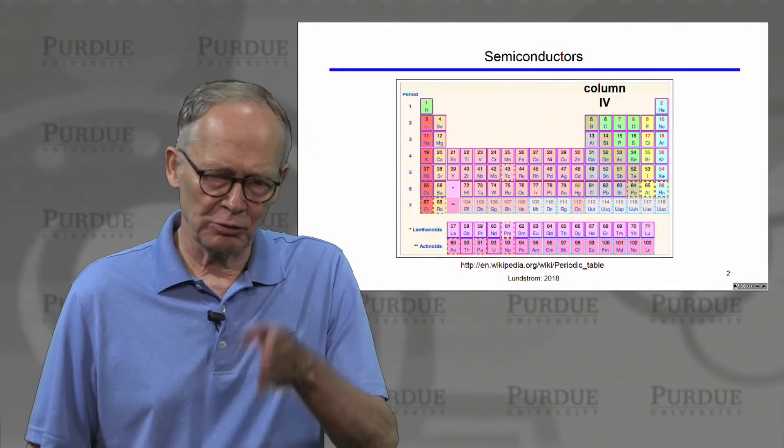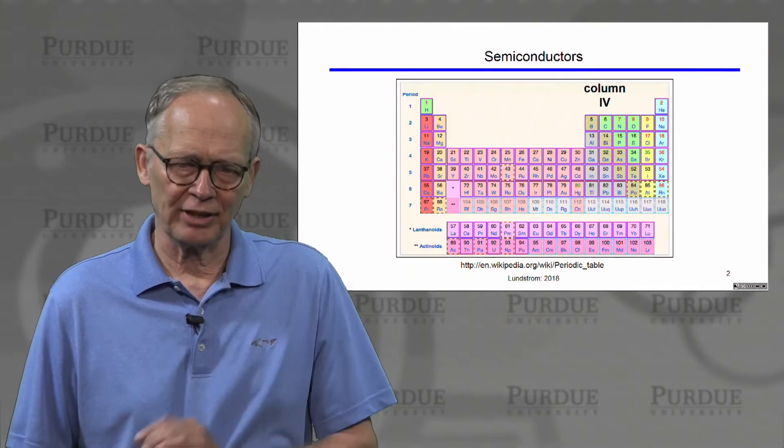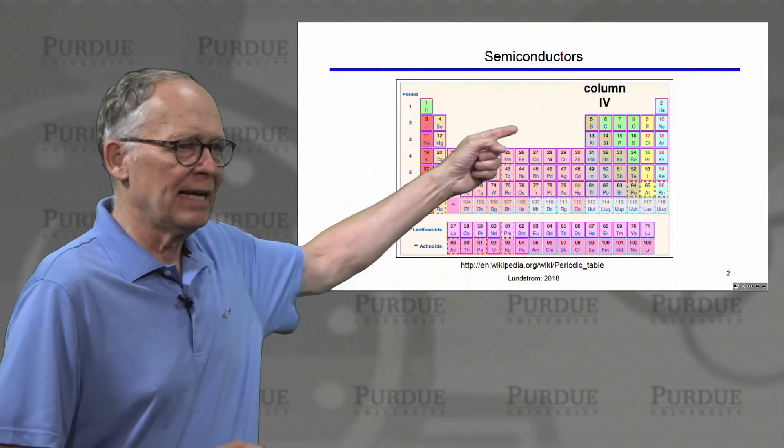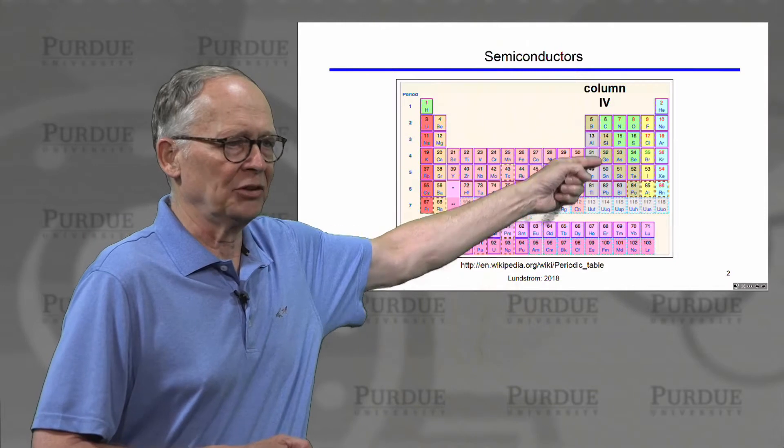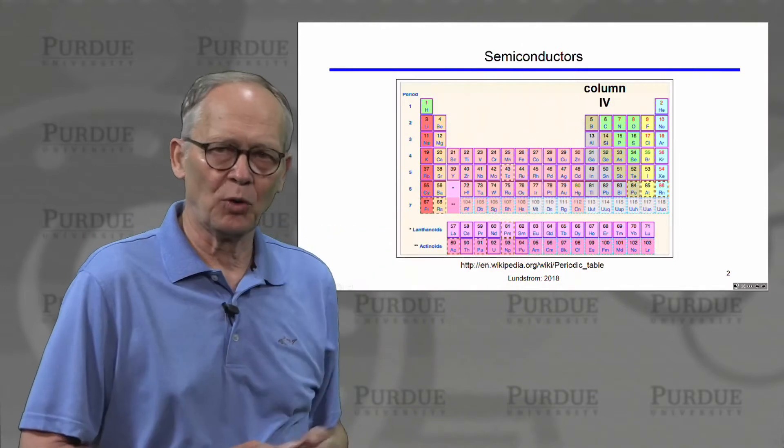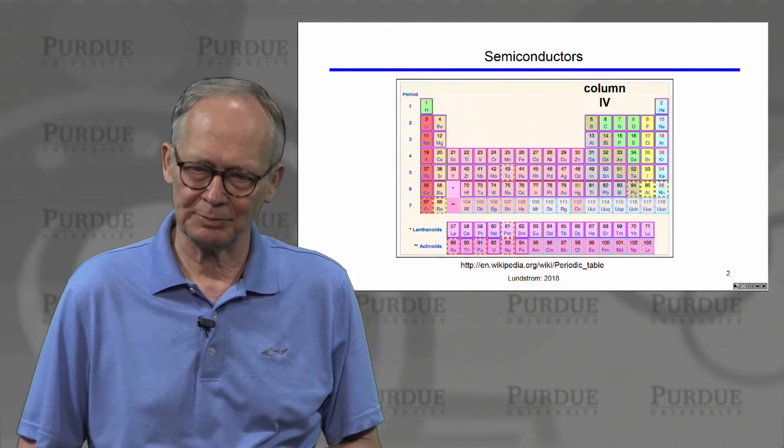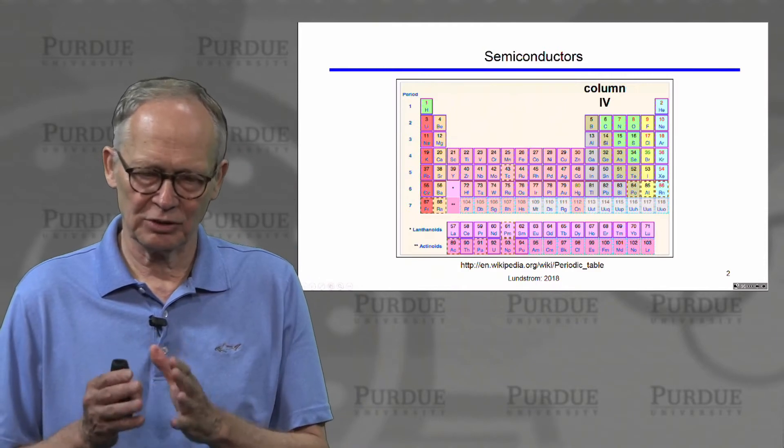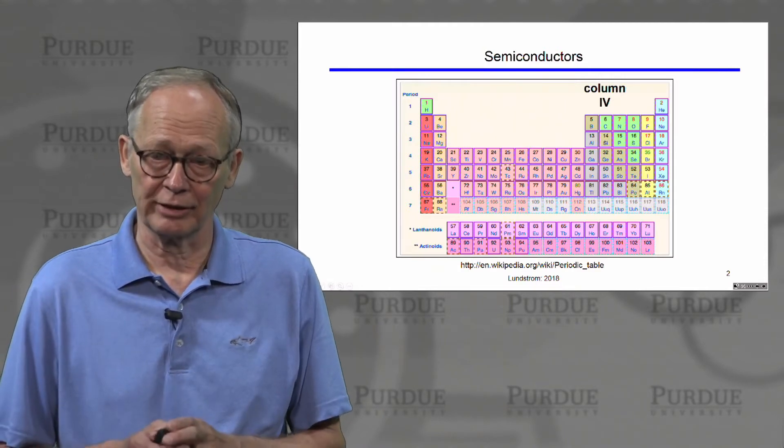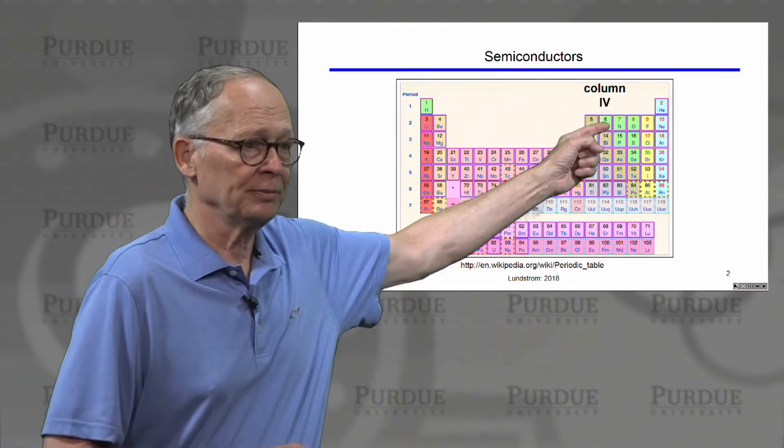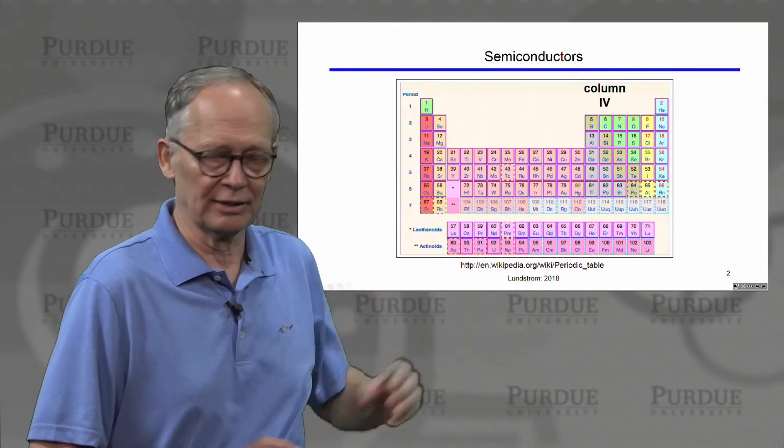The particular column, you'll recall that the elements in a column in the periodic table have the same number of valence electrons. Column four is particularly important for us because it's a column that the most common semiconductors occur in. And in column four, we have four valence electrons per atom.